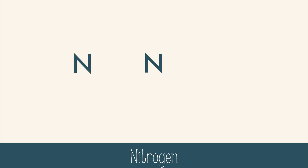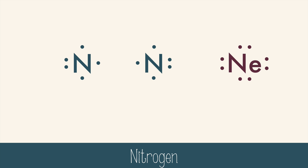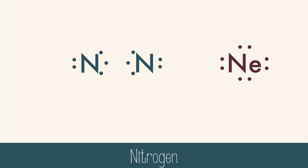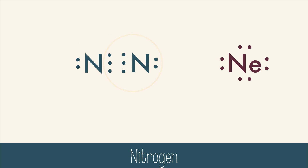Diatomic nitrogen will have a triple bond. Each nitrogen atom has five valence electrons. Those lone electrons are a hint that three bonds will be made, because they want to have eight electrons to be like neon. Those lonely electrons will form three bonds, creating a triple bond. This works because each nitrogen feels like it has eight valence electrons. You can also simplify this by drawing lines to represent each pair, which helps you to see that this is a triple bond.